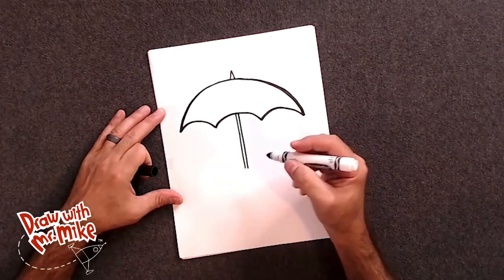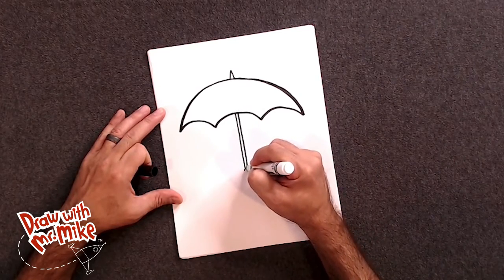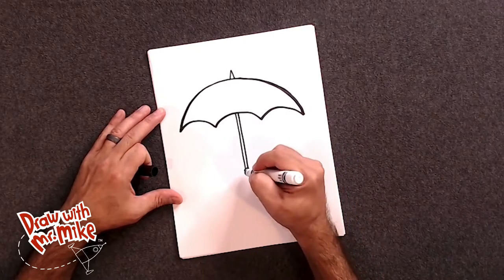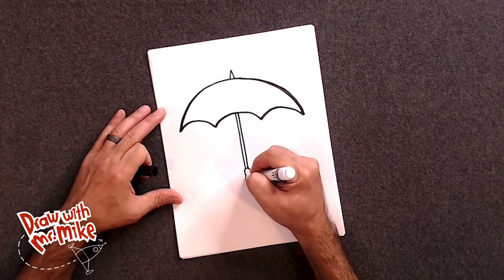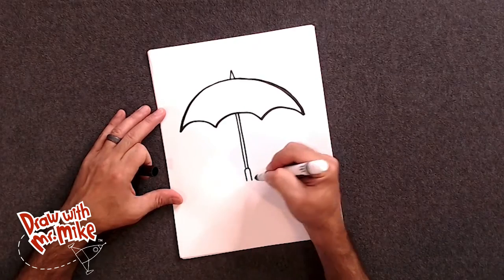And now, we're going to create a handle. We'll draw an arc. A small arc right here. And we'll do a line that comes down. And then another line that comes down on this side.